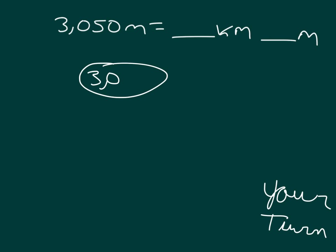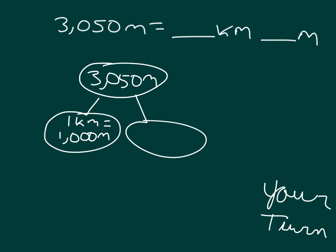Did you start with 3,050 meters? And then you broke it apart into what? How many thousands were you able to take out there? 1,000 meters there, which also equals 1 kilometer. Another 1,000 meters, which equals 2 kilometers altogether. And even another 1,000 meters, which equals another kilometer.